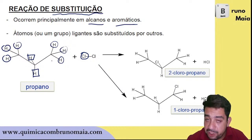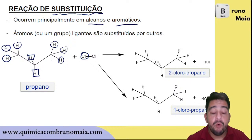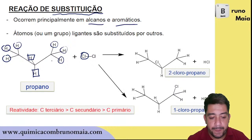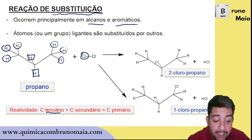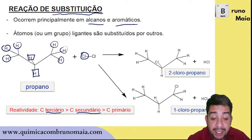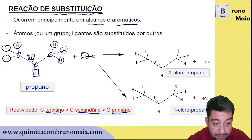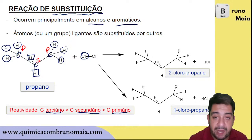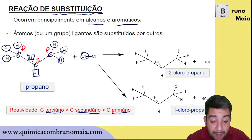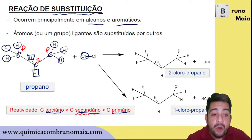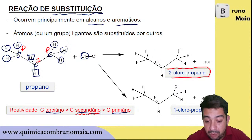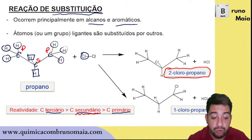Here too there is a rule of preference related to which carbon the hydrogen leaves from. A tertiary carbon is more reactive than a secondary, which is more reactive than a primary. In propane: the two terminal carbons are primary, and the middle carbon is secondary because it is bonded to two other carbons. Since the secondary carbon is more reactive than the primary, the hydrogen preferentially leaves from there. So 2-chloropropane is the major product in this case.